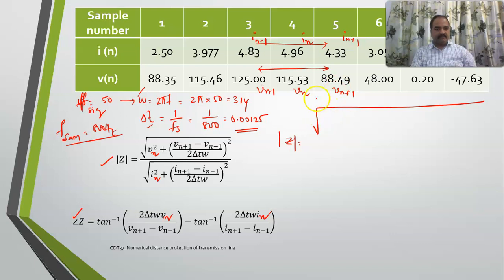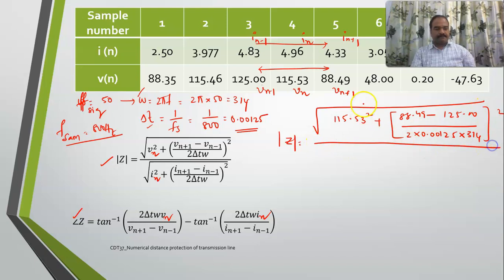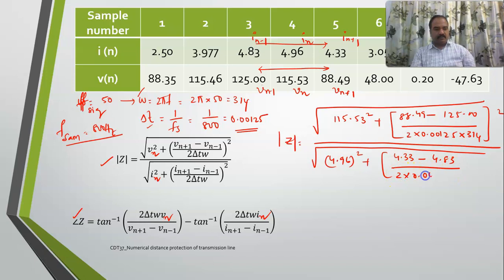In this case, what is Vn? It is 115.53 square plus here I will write it as 88.49 minus 125.00 by 2 into 0.00125 into omega value 314 whole square by. This is 4.96 square plus 4.33 minus 4.83 by 2 into 0.00125 into 314 whole square.